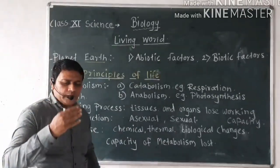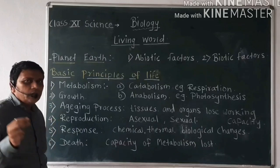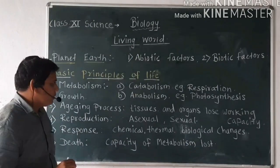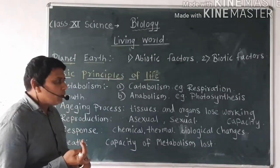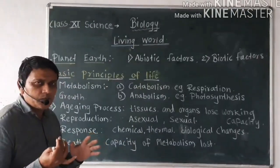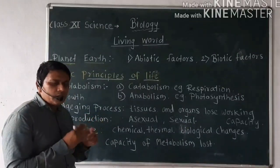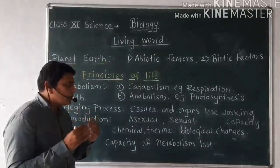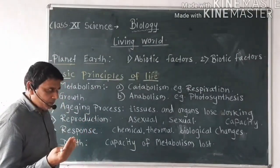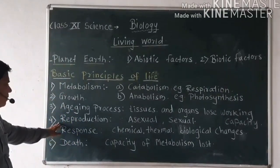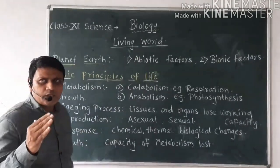The third basic principle of life is the aging process. Cells, tissues, and organs after a certain period of time lose their working capacity, and due to this, aging occurs in living organisms. Cells get organized into tissues, tissues get organized into different organs and organ systems forming a complete organism. When all these cells, tissues, and organs start to lose their working capacity, the organism starts to age.